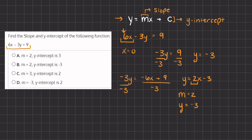You can find the y-intercept in two ways: the first way is to set x equal to 0, or you can convert the function into slope-intercept form and then easily recognize the slope and y-intercept. In this case, the coefficient of x is 2, so that is our slope, and plus negative 3 is our y-intercept. Therefore m equals 2 and the y-intercept equals negative 3. This is the way to find slope and y-intercept of linear functions, and in our example, the answer is B.